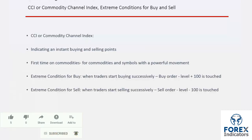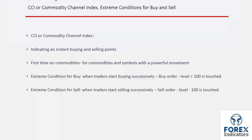A buy extreme condition shows a great tendency to buy, which creates a good opportunity for a trader to place a buy order. Whenever the CCI trend touches level plus 100, a trader can place a buy order.